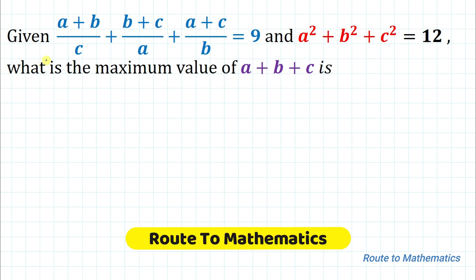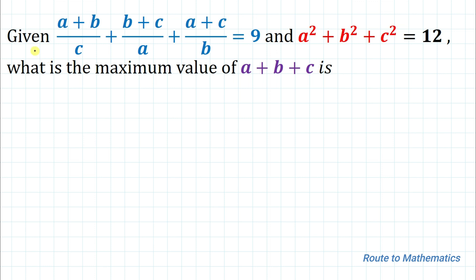Hello everyone, welcome to Root 2 Mathematics. In this video we are going to solve this interesting olympiad question. We are given (a+b)/c + (b+c)/a + (a+c)/b = 9 and a² + b² + c² = 12. We are asked to find the maximum value of a + b + c. Without any delay, let's start the solution.